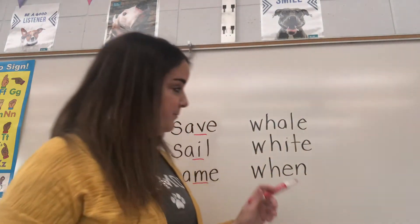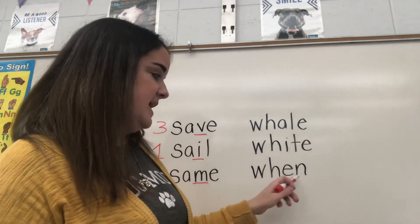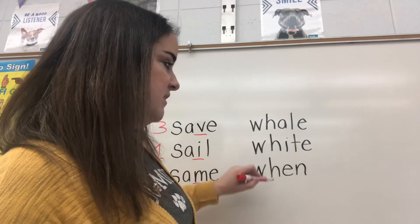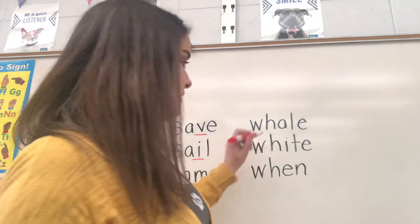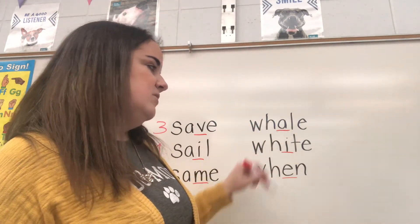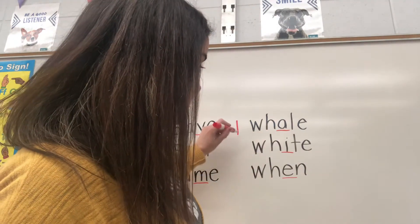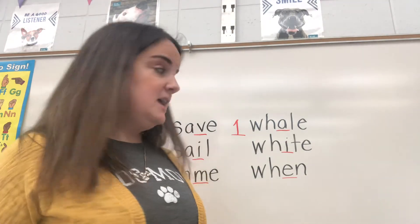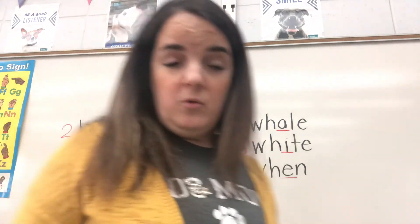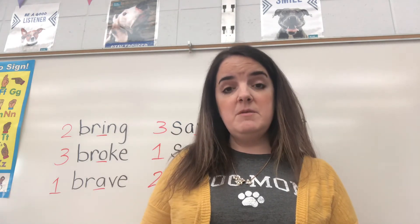This last column — we have the word whale, white, and when. Once again, we have Ws, they're all the same. So I'm going to move to my second letter, and that's an H — they're all the same. So we're going to move to our third letter. We have an A, an I, and an E — they're all different, so we can stop there. We have A, I, or E. Which word would come first? If you answered whale, you are correct. Whale would be our first word, then our second word would be when because the E comes after the A, and then our third word would be white.